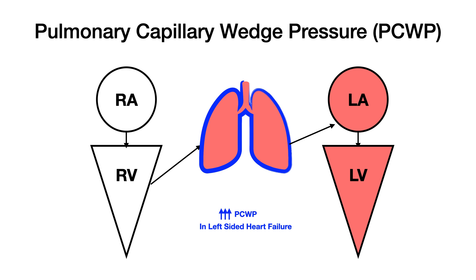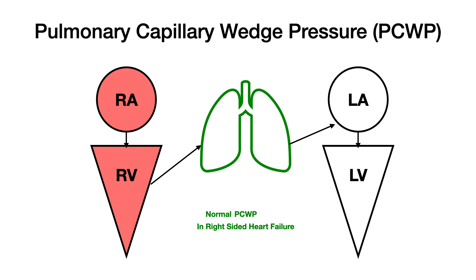Left ventricle can't squeeze — pressure's up in the lungs. Contrast that to right-sided heart failure. In right-sided heart failure, if the right ventricle can't pump out blood, that backs up — but not into the lungs. So a wedged catheter in the pulmonary system might show a normal pulmonary capillary wedge pressure.